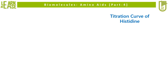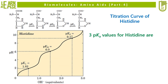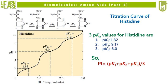The titration curve of histidine is shown here, where it possesses three pKa values. The image on the left shows the titration curve of histidine, where pK1 equals 1.82, pK2 equals 9.17, and pKr equals 6.0. Therefore Pi equals the mean of pK1, pK2, and pKr, which on calculation is found to be 5.66. So at pH 5.66 the net electric charge on histidine is zero.